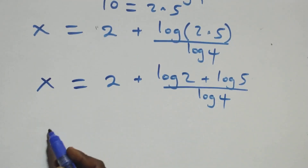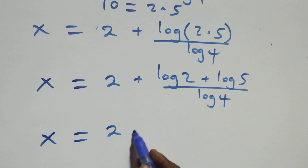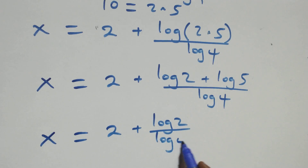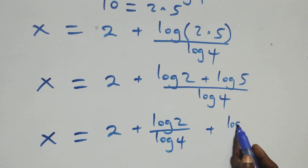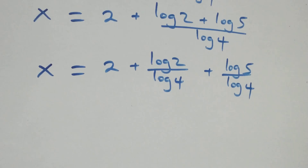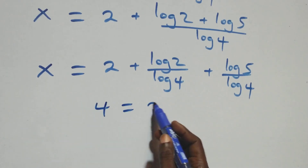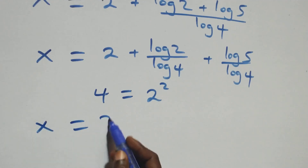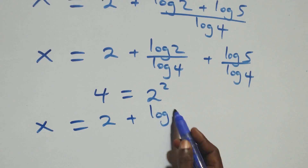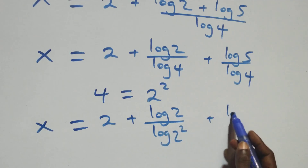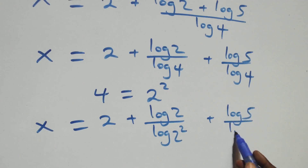We separate this into two fractions: x equals 1 plus log 2 over log 4 plus log 5 over log 4. Also, 4 can be written as 2 times 2, that's 2 squared. So x equals 1 plus log 2 over log(2²) plus log 5 over log(2²).